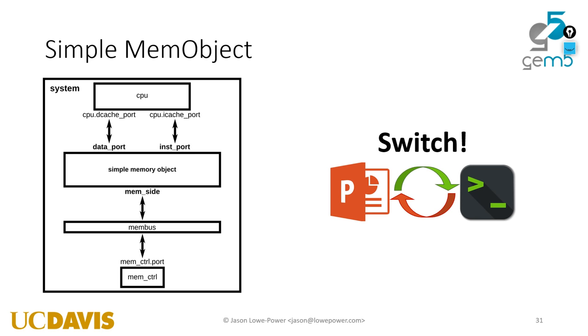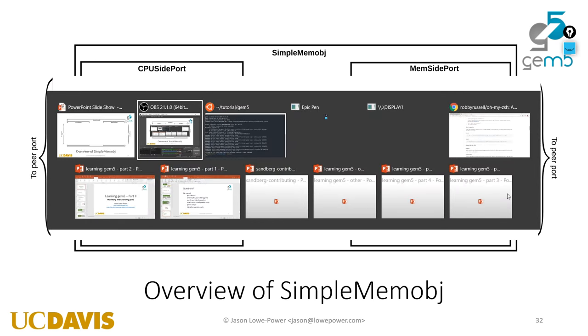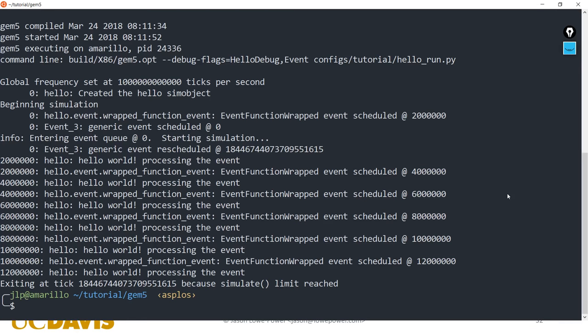What we're going to do is create a simple MEM object. We're going to take our hello object and make it a MEM object, essentially having a CPU that talks to our MEM object, which is just going to pass things straight through to the memory bus. On responses, it's just going to pass things back to the CPU.